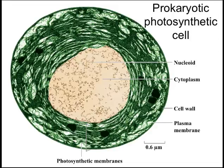Just before we move to the next slide, take a few seconds to observe how similar this prokaryotic cell is to a chloroplast in a plant cell. This observation makes sense, since chloroplasts appear to have derived from free-living photosynthetic bacteria, just like this one here.